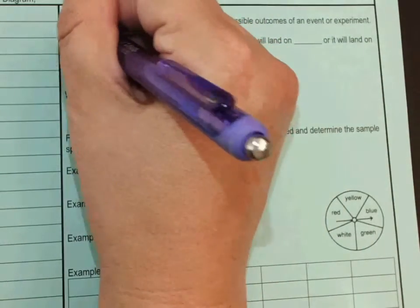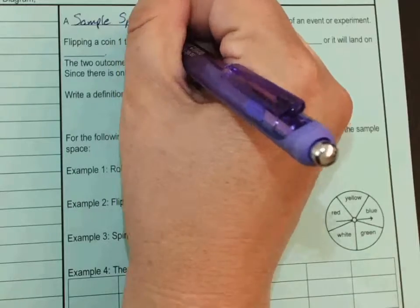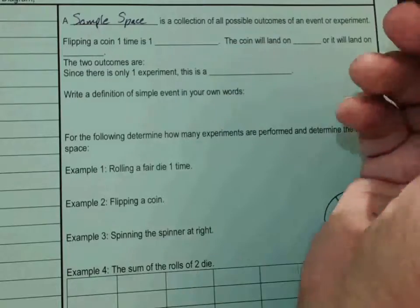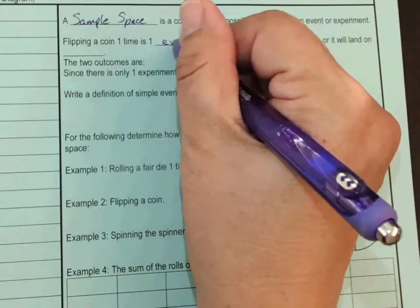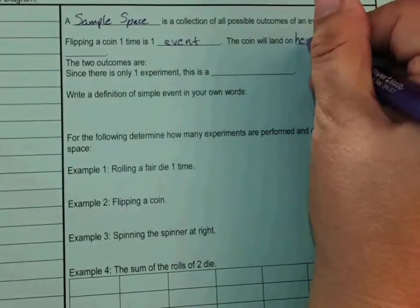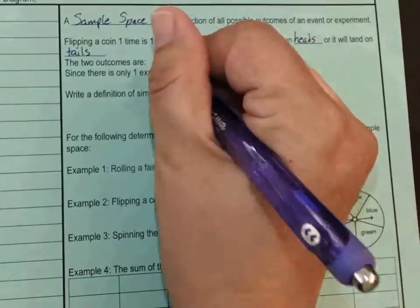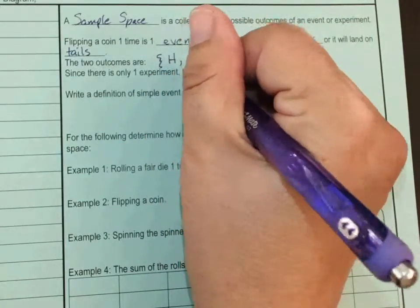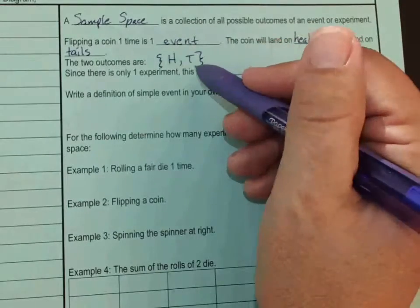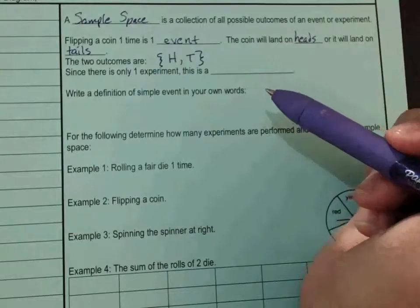A sample space is a collection of all possible outcomes of an event or experiment. So flipping a coin one time is one event. The coin is going to land either on heads or tails. So the two outcomes are heads or tails. That's how you write a sample space, by the way. We tend to have the brackets, and then we have the symbols for each of the outcomes.